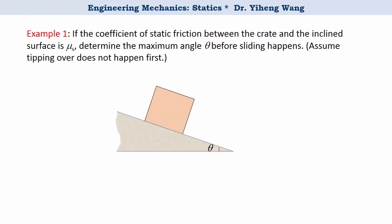First example. Imagine there's a crate sitting on an inclined surface with angle theta. The coefficient of static friction between the crate and the surface is mu_s. From experience, we know that if the angle theta is small or the surface is flat, then the crate can stay static. However, if the angle theta is big or the surface is steep, then motion could happen. The crate could either tip over or it can slide down the surface.